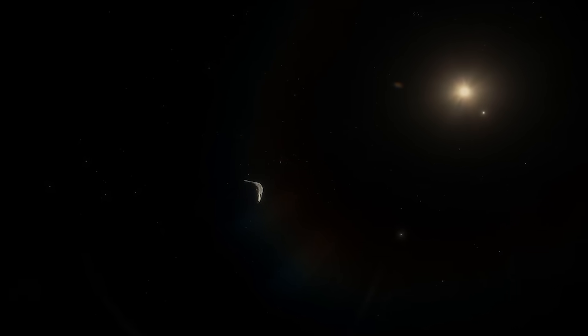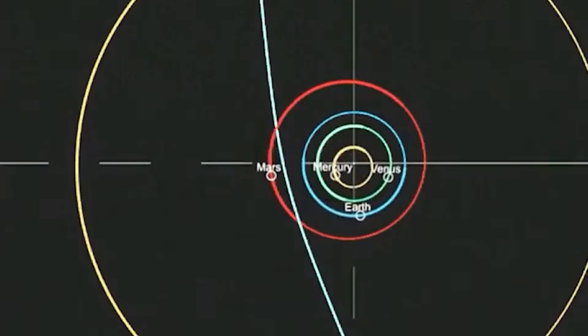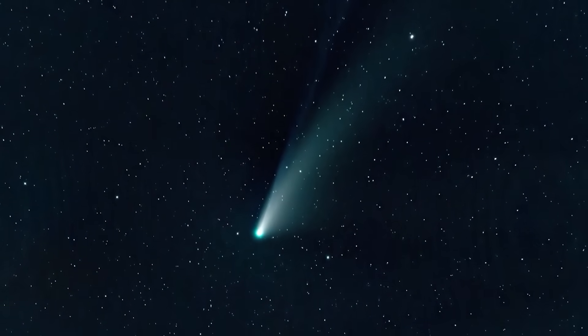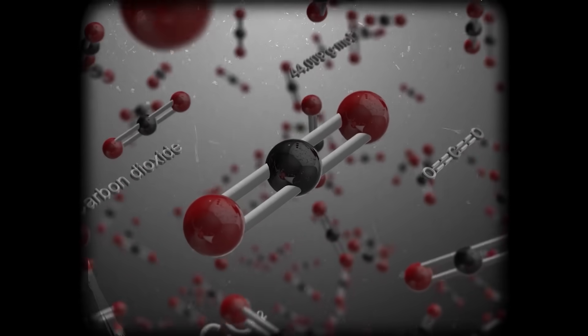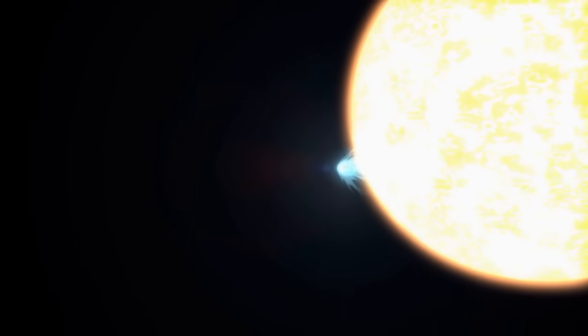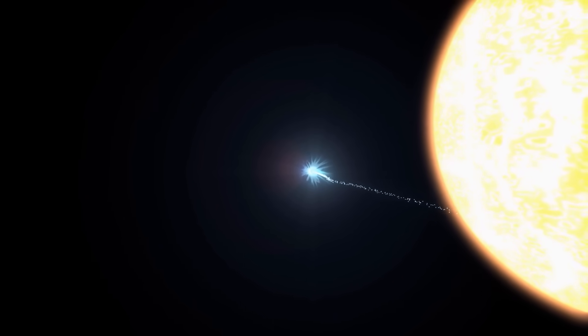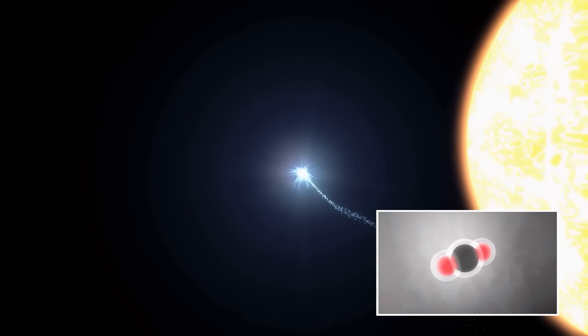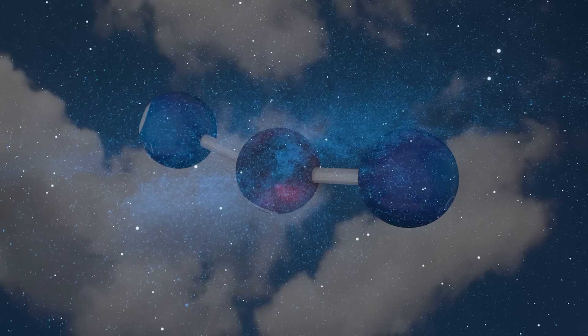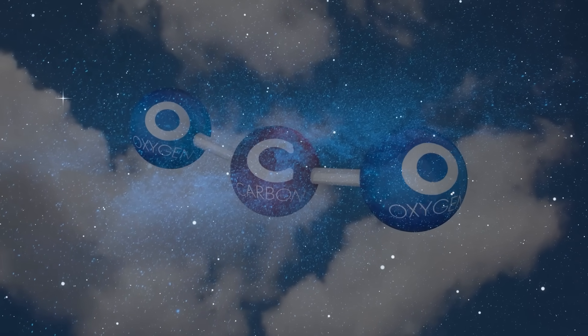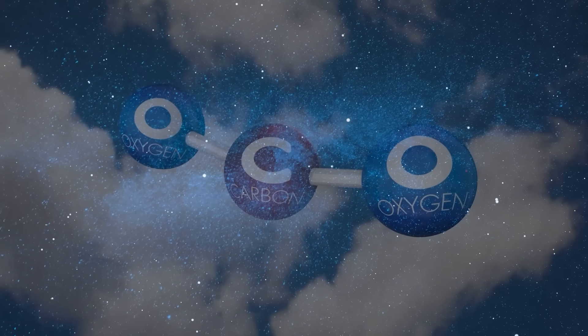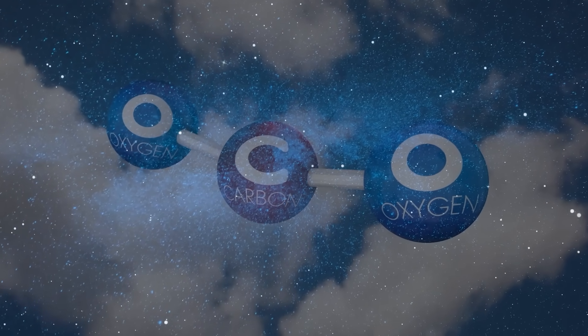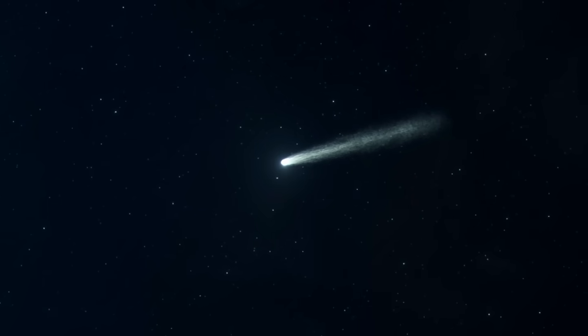What truly pushed 3I Atlas into the realm of profound mystery wasn't just its speed or trajectory, at least not yet. It was its very makeup. In standard comets, frozen water is the dominant feature, with carbon dioxide present only in smaller supporting roles. Here, the ratio looked all but reversed. Instruments detected high levels of carbon dioxide streaming away, with water scarce by comparison. That alone was enough to mark it as peculiar, a cosmic anomaly. But the oddities did not end there.